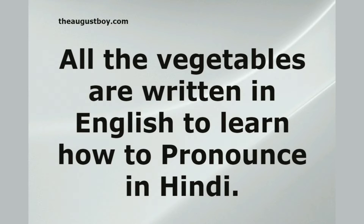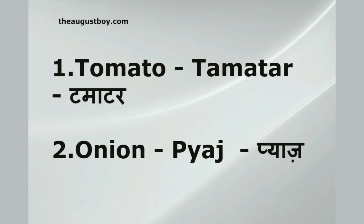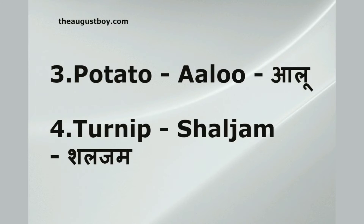All the vegetables are written in English to help you learn how to pronounce them in Hindi. Tomato — tamatar. Onion — pyaz. Potato — aloo. Turnip — shalgam.